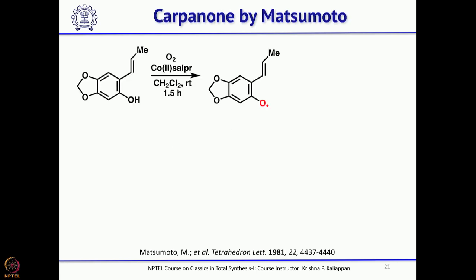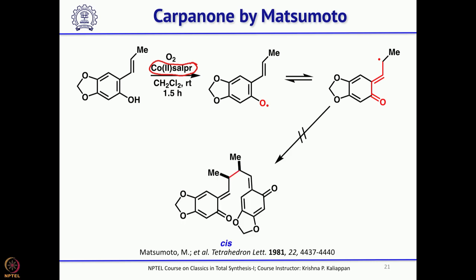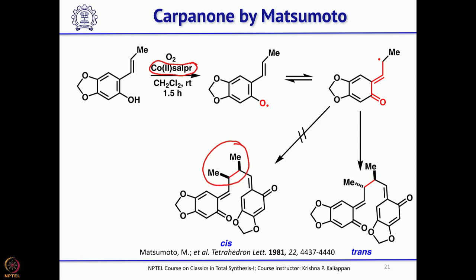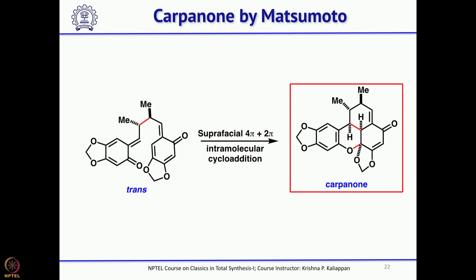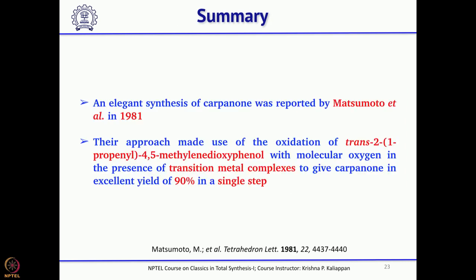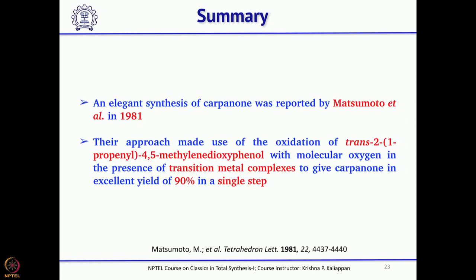Using oxygen and the cobalt(II) Schiff base complex, it forms a radical. That radical migrates to give an allylic radical that spontaneously undergoes dimerization. It does not give the cis isomer — it gives only the trans isomer, and as soon as the trans isomer is formed, it undergoes intramolecular suprafacial 4π + 2π cycloaddition to give carpanone in one step. This synthesis was obtained in 90% yield in a single step from the intermediate reported by Chapman.